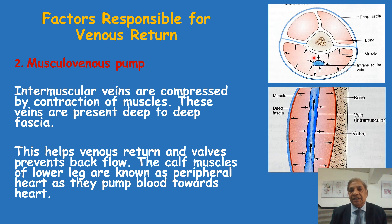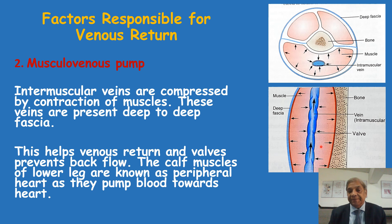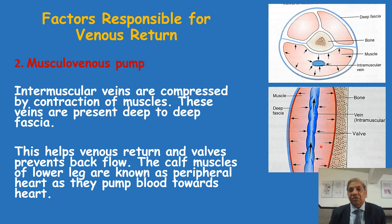As seen in both longitudinal and transverse sections, because of muscular contraction the veins are compressed. Since the veins contain valves, this compression pushes a column of blood upward, and once it goes up it cannot come back. So because of repeated muscle contraction — as experienced during walking, running, and jumping — this muscular contraction helps the venous return. That is why the calf muscles, or muscles of the leg, are known as the peripheral heart, because just like the heart pumps blood, this musculo-venous pump pushes blood in the veins towards the heart, helping venous return.